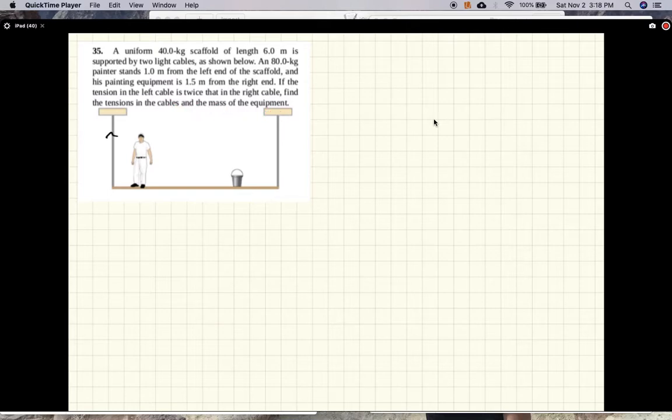Okay, so we'll call this tension T, so this is 2T. This is 1 meter mg, mg, and this is the mass of the scaffold.